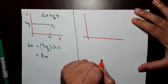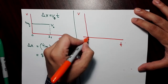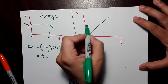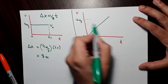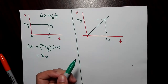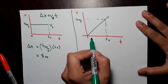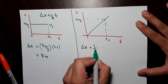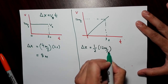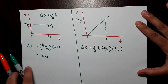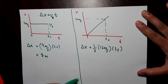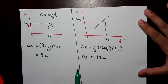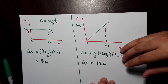Now if the velocity is a linear function — changing at every point — let's say it reaches 12 meters per second at three seconds. The displacement from zero to three seconds is the area of this triangle: delta x equals one-half times 12 meters per second times three seconds, which gives 18 meters.